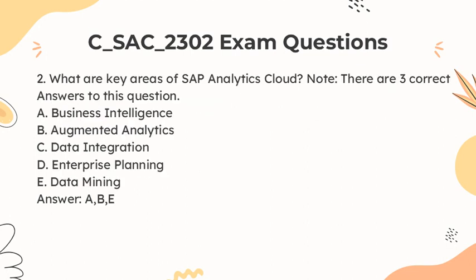Question 2. What are key areas of SAP Analytics Cloud? Note: There are three correct answers to this question. A. Business Intelligence. B. Augmented Analytics. C. Data Integration. D. Enterprise Planning. E. Data Mining. Answer: A, B, E.